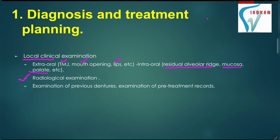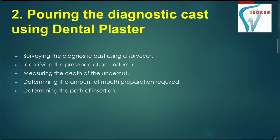We have to do radiological examination as well, and examination of previous dentures if present, and examination of pretreatment records if available. The second step is pouring the diagnostic cast using dental plaster. In this, we have to first survey the diagnostic cast using a surveyor and identify the presence of any undercut, and if present, measure its depth and determine the amount of mouth preparation required.